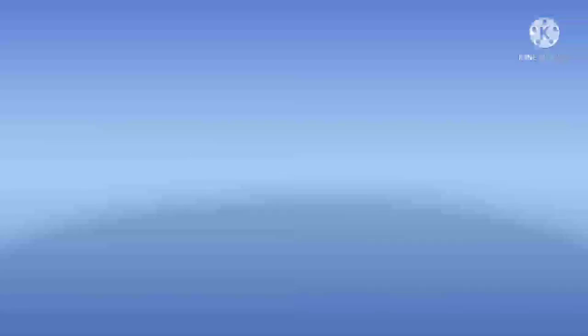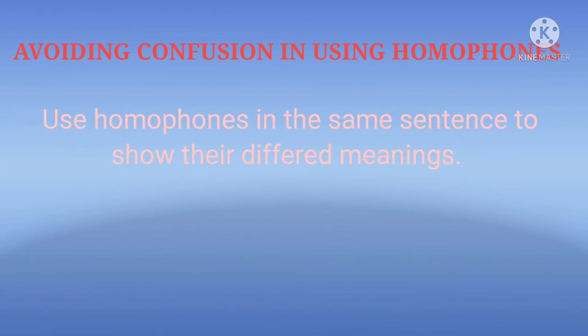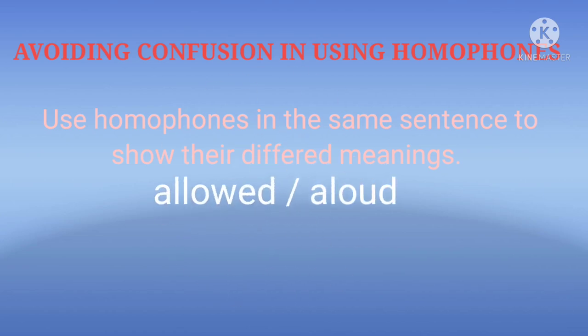Now we see how to avoid such confusion in using homophones. The first thing we have to do is practice using both words in the same sentence to show their different meanings. For example, take two words: A-L-L-O-W-E-D, allowed, meaning to give permission for someone to do something, and A-L-O-U-D, aloud, meaning making a bigger sound or in a loud way.